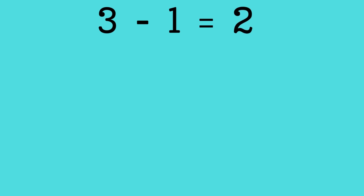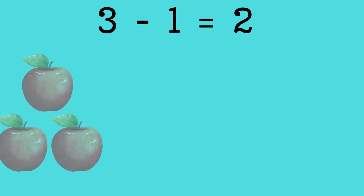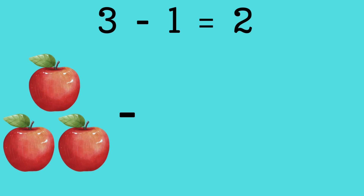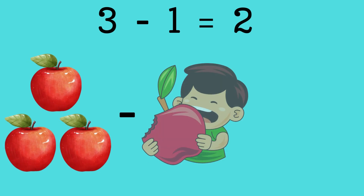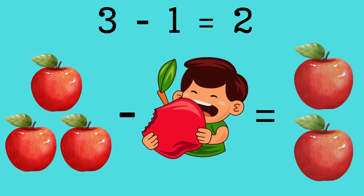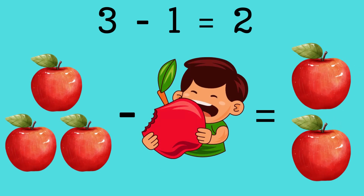3 minus 1 equals 2. Let's say you have 3 apples and you ate 1 apple. How many apples left? Correct, 2 apples.